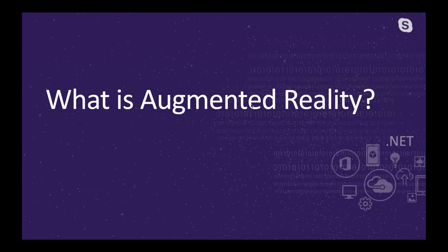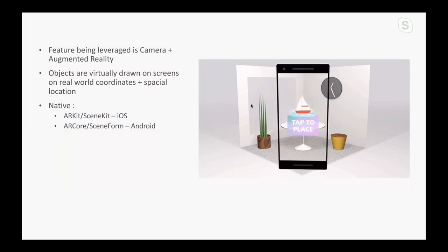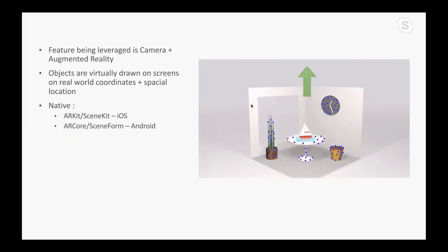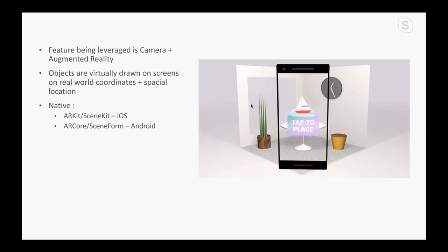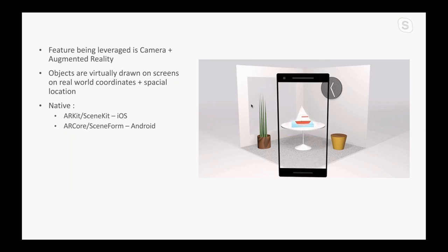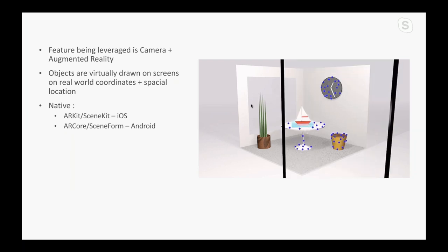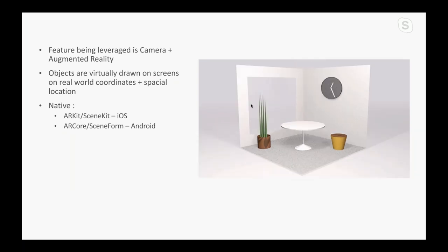Let's get into the meat of this topic. What is augmented reality, what is mixed reality, and how does this all work with Xamarin? So imagine your camera is a giant canvas — anything it points to is your canvas, and you can throw 3D models at it to generate in any space visible to your camera. In very simple layman's terms, in augmented reality, every frame your camera provides is your canvas and you'll be virtually drawing objects on it within a coordinate system that is relative to your spatial location.